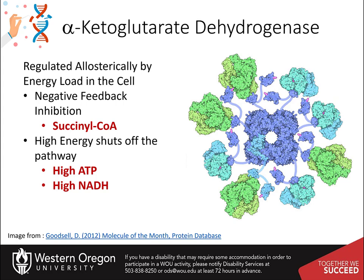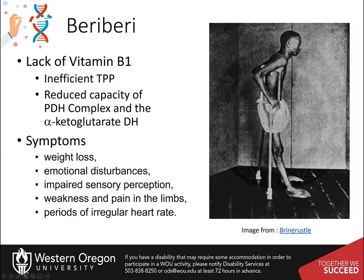The alpha-ketoglutarate dehydrogenase undergoes negative feedback inhibition by an accumulation of succinyl-CoA product levels. High levels of ATP and NADH are also inhibitory. Note that vitamin deficiencies can cause disease states such as beriberi. A lack of vitamin B1 will lead to inefficient production of the thiamine pyrophosphate cofactor required for the pyruvate dehydrogenase and alpha-ketoglutarate dehydrogenase complexes. Thus these enzymatic steps will not function well to produce ATP, and patients will experience weight loss, emotional disturbances, and other neurological and muscular symptoms.